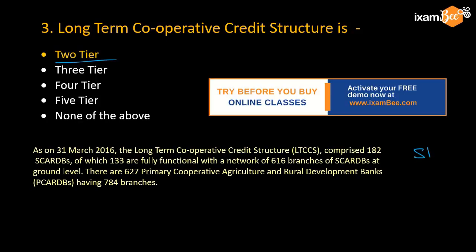As per the latest data in the NABARD report, there are 182 SCARDBs, of which 133 are fully functional. At the ground level, there are 617 branches of SCARDBs. You don't need to remember these specific numbers, but you should definitely know that for long-term credit cooperative, the structure is a 2-tier structure.